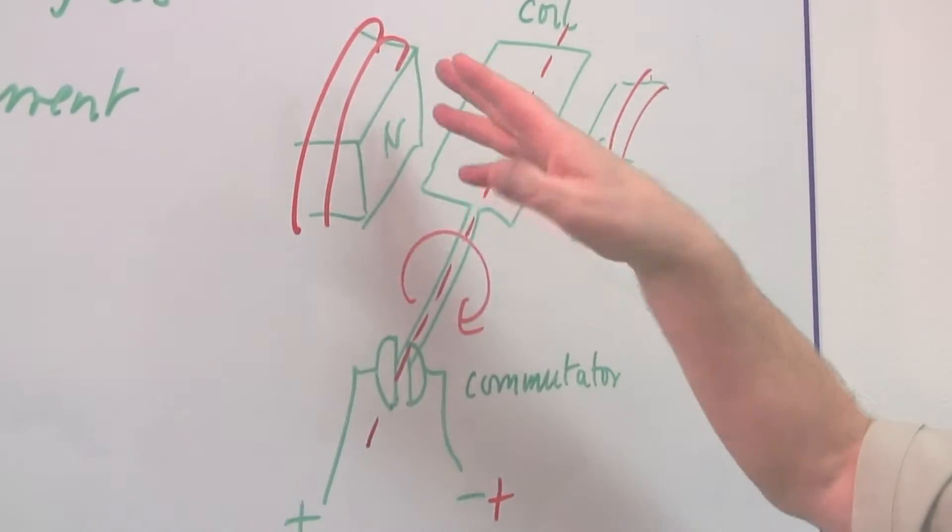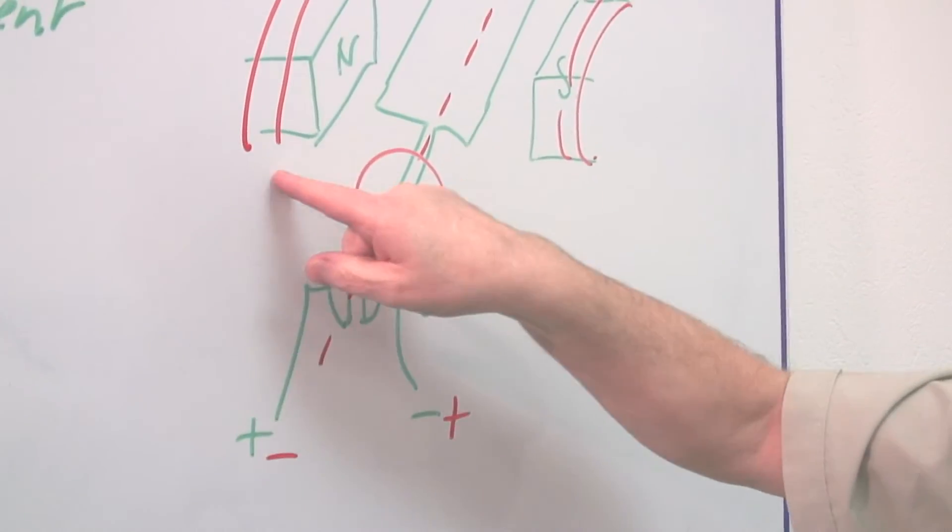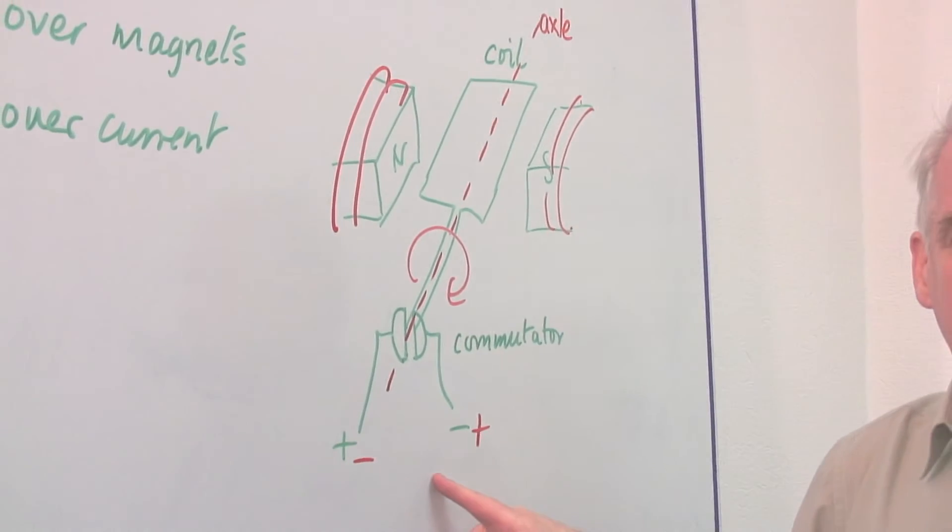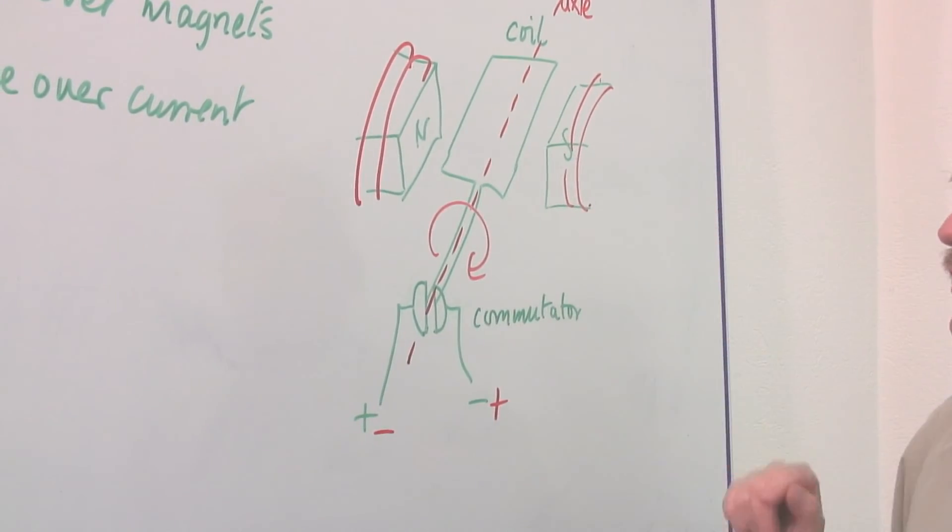in which case I'd have to change over the current in the field coils, but I mustn't change both over at the same time. So I can't use the same current to drive both.